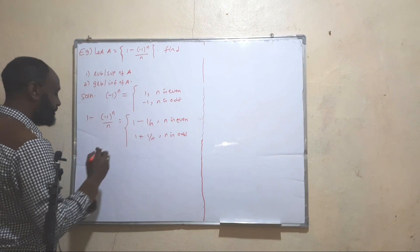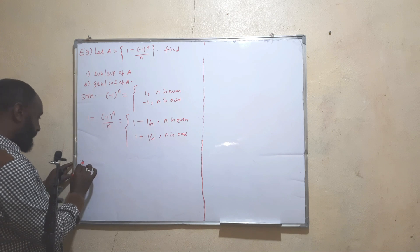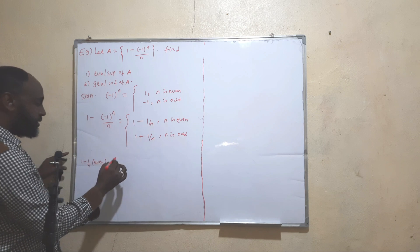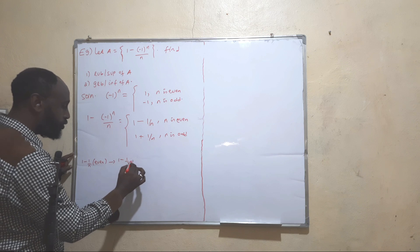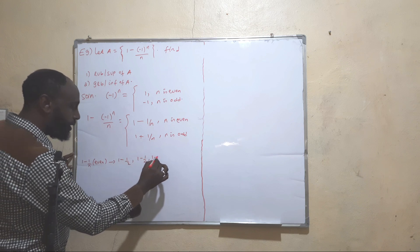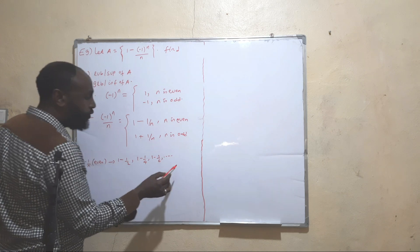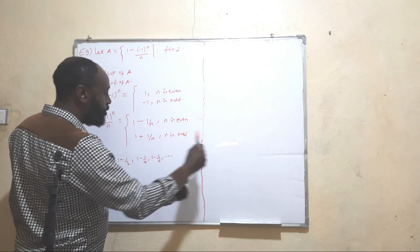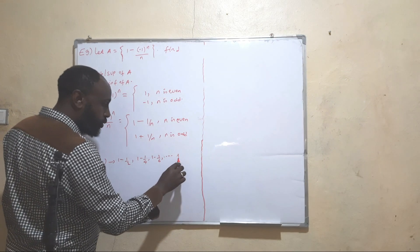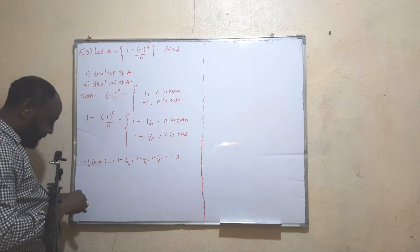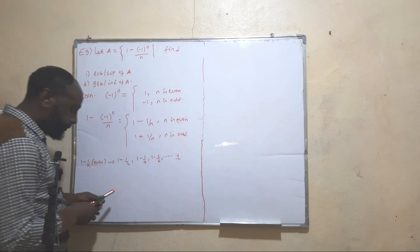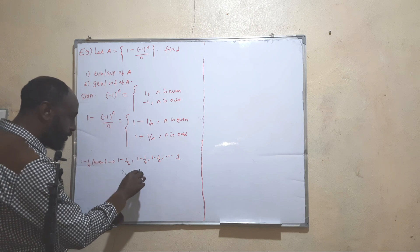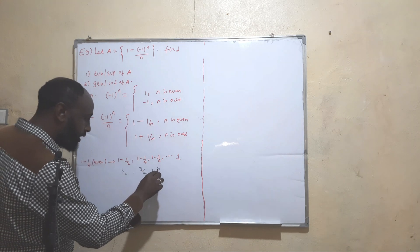Now let's look at the elements of the two parts. For the even part, 1 - 1/n, inserting even numbers starting from 2: 1 - 1/2, 1 - 1/4, 1 - 1/6, and so on. As n tends to infinity, 1/n → 0, so the limit is 1. So the values are 1/2, 3/4, 5/6, ... approaching 1.